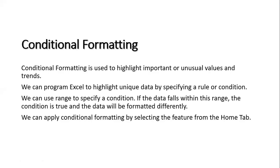We can use range to specify a condition. For instance, if I give a range of ages between 20 to 30 years, then the data which comes under this category will be highlighted differently. So if the data falls within this range, the condition is true and the data will be formatted differently.